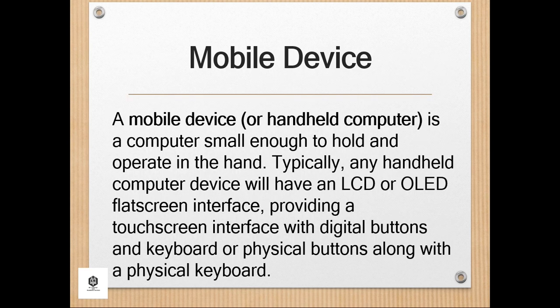A mobile device or handheld computer is a computer small enough to hold and operate in the hand. Typically, any handheld computer device will have an LCD or OLED flat screen interface, providing a touchscreen interface with digital buttons and keyboard or physical buttons along with a physical keyboard. Many such devices can connect to the internet and interconnect with other devices, such as car entertainment systems or headsets via Wi-Fi, Bluetooth, cellular networks, or near-field communication.